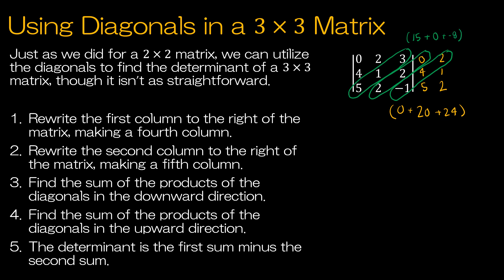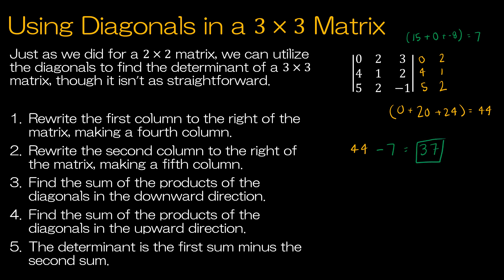I typically use a highlighter to highlight the diagonals to keep things straight. The sum of the downward diagonals is 44, and the sum of the upward diagonals is 7. Then I take 44 minus 7, which gives me my determinant of 37. When showing work, I would just write 0 plus 20 plus 24, minus 15 plus 0 plus negative 8, and then go right to 37.